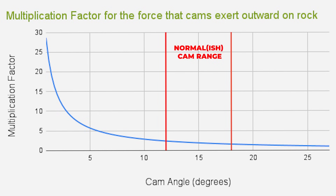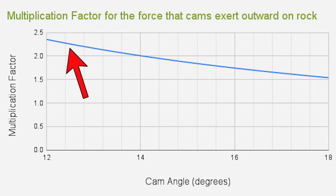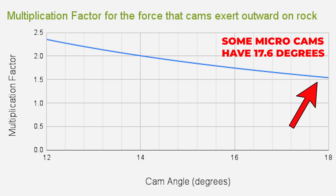Not all cams have the same logarithmic angle, so how does that affect force? Plotting all these angles on a graph, a 1-degree cam would put over 20 times the force outward versus what you pull down. Past 25 degrees, you'd have a ton of range but the cam wouldn't hold, and outward force drops below 1x. For the most normal cam angles, you'll see slightly above 2x outward force, down to about 1.5x for an 18-degree cam.